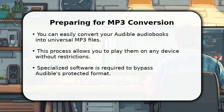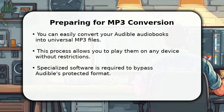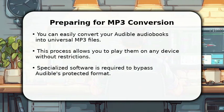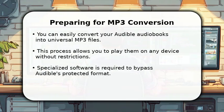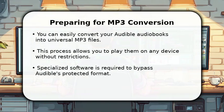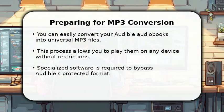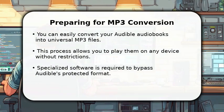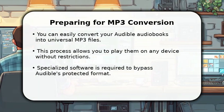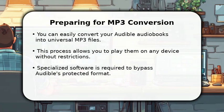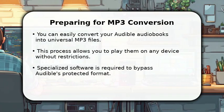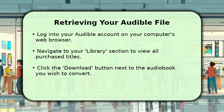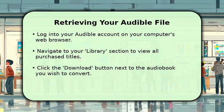First, you will need to download your chosen Audible audiobook to your computer. Then, a dedicated conversion tool will transform the protected AAX file into a standard MP3 format. This simple process allows you to enjoy your audiobooks on virtually any media player or device, giving you complete freedom.